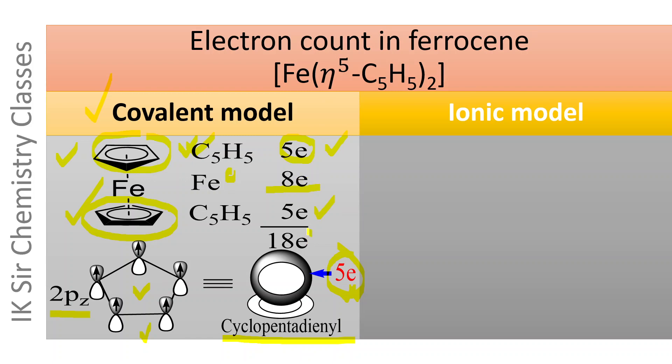The overall electron count is 18 according to covalent model. Let us now consider ionic model. According to this model, ferrocene molecule contains two C5H5 minus rings, cyclopentadienyl anion. In this cyclopentadienyl ring, one 2pz atomic orbital is fulfilled, contains two electrons and it has minus charge.